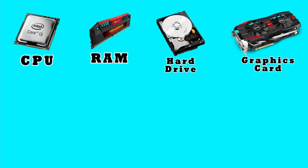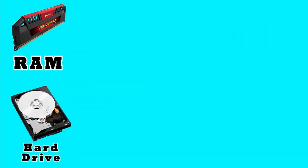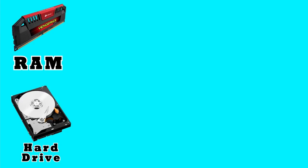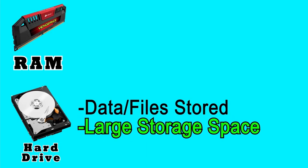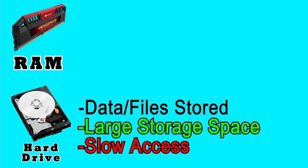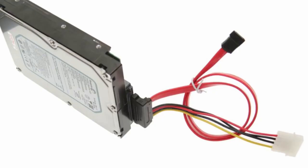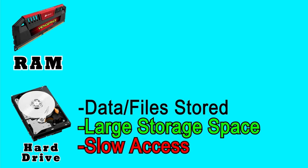Let's talk about RAM and hard drive at the same time, because they have a very unique relationship, which is probably why people often confuse the two. Your hard drive is where all of your data is stored. When your computer tells you you're running low on space, it's because your hard drive is almost full. While hard drives can store lots of data, they're relatively bad at accessing that data quickly — and because most hard drives are made up of spinning disks, they can't constantly give the CPU the information it needs.